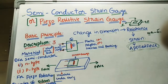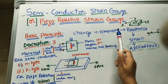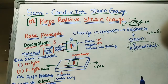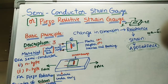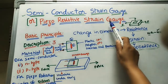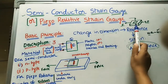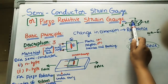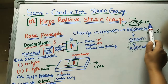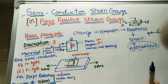Let us discuss semiconductor strain gauges, also called piezo-resistive strain gauges. These gauges are used to find the applied pressure or applied force on a given structure, or sometimes for finding the vibrations of a given structure. They find very accurate values of applied force or applied pressure in small amounts — if the applied force is very small, they give a very accurate value.